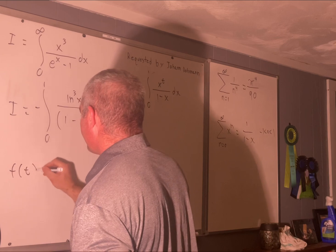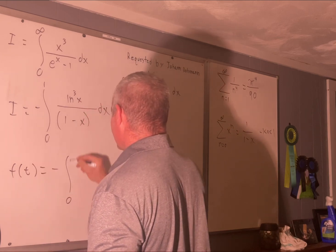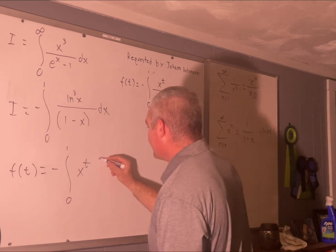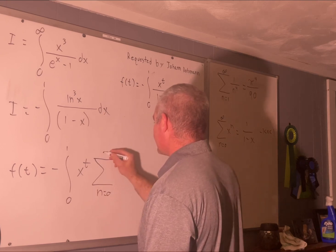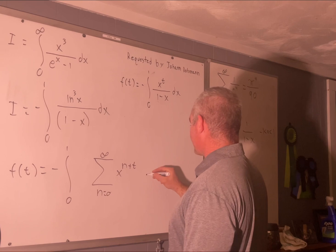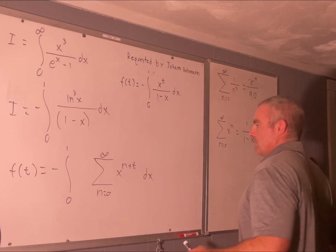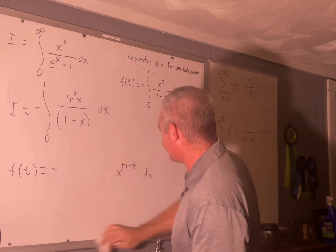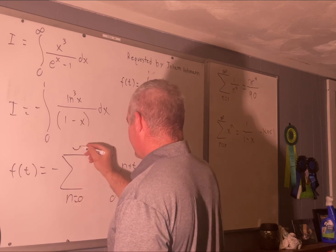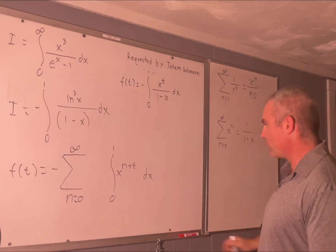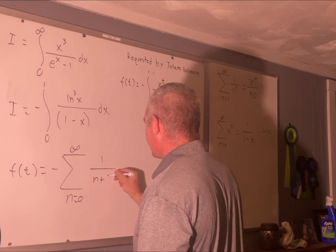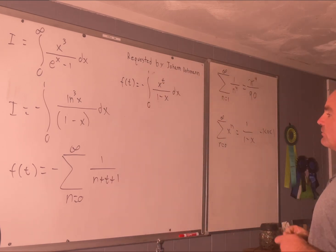We know that the sum as n goes from 0 to infinity of x to the n is equal to 1 over 1 minus x on that interval. And that's why I wanted to bounds 0 to 1 so that we could use this. All right. Okay. So we can rewrite our f of t like this. f of t is equal to negative integral 0 to 1. We'll keep the x to the t as is, and then we'll rewrite the 1 over 1 minus x as this infinite sum right here. Times the sum as n goes from 0 to infinity of x to the n. We'll bring that x to the t inside the sum. And of course I forgot the dx.